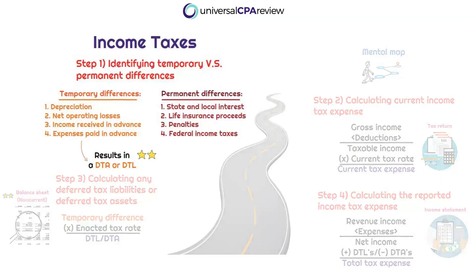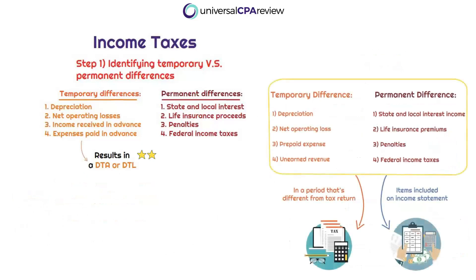Temporary differences are going to be considered items of revenue and expenses that will enter pre-tax GAAP financial income in a period either before or after it is entered in taxable income. Examples can include expenses or losses that are deducted either before or after they have been deducted from book income. If expenses or losses are getting recognized on the tax return — bringing down the taxable income amount — but they are yet to be recorded as expenses for financial reporting purposes, then this would result in a temporary difference.